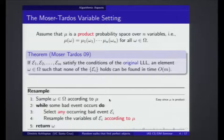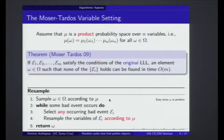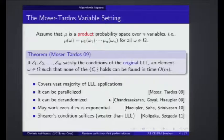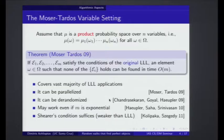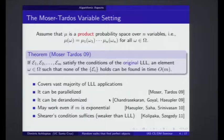Basically you sample from the measure, then you look at any bad event — it doesn't matter which one — and then you resample the variables of that bad event. Then you just keep doing this, and the claim is that the overall number of violated bad events will shrink over time down to zero. The algorithm of Moser and Tardos has a number of additional nice properties: you can make the algorithm parallel, you can de-randomize it. Kolipaka and Szegedy prove that the algorithm works even under a condition which is weaker than the condition of the LLL. One property that is particularly nice is that if the events intersect each other in an additionally nice way, then the algorithm will finish in polynomial time even if the number of events is exponential.